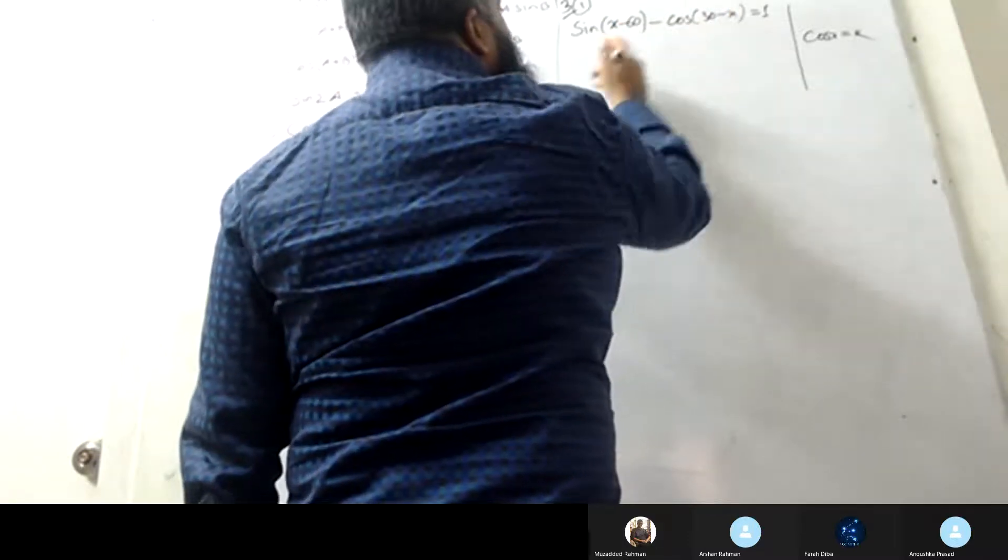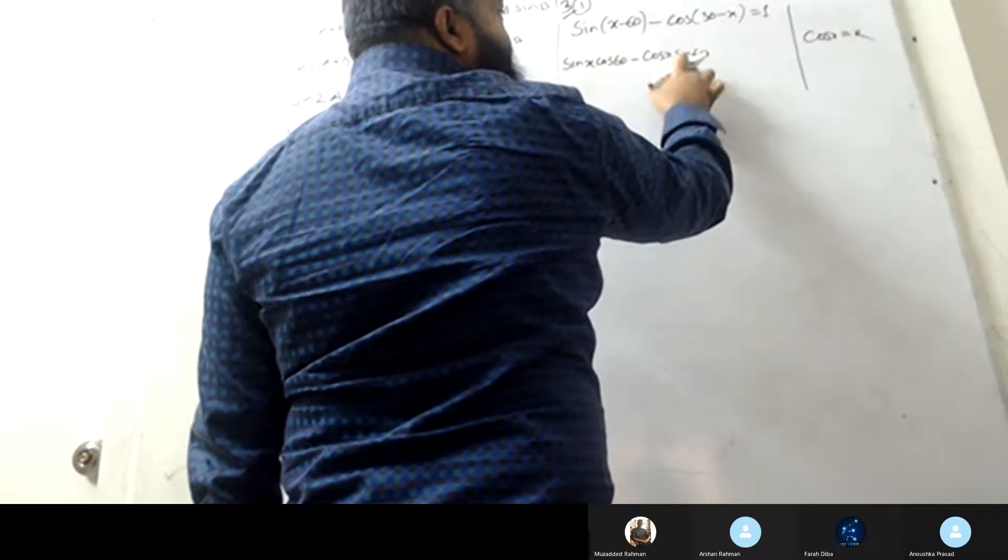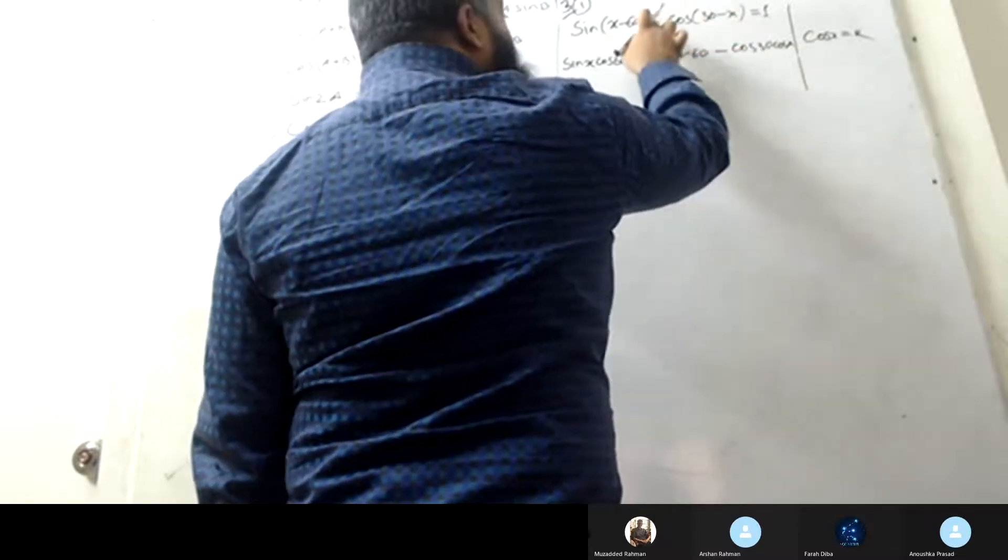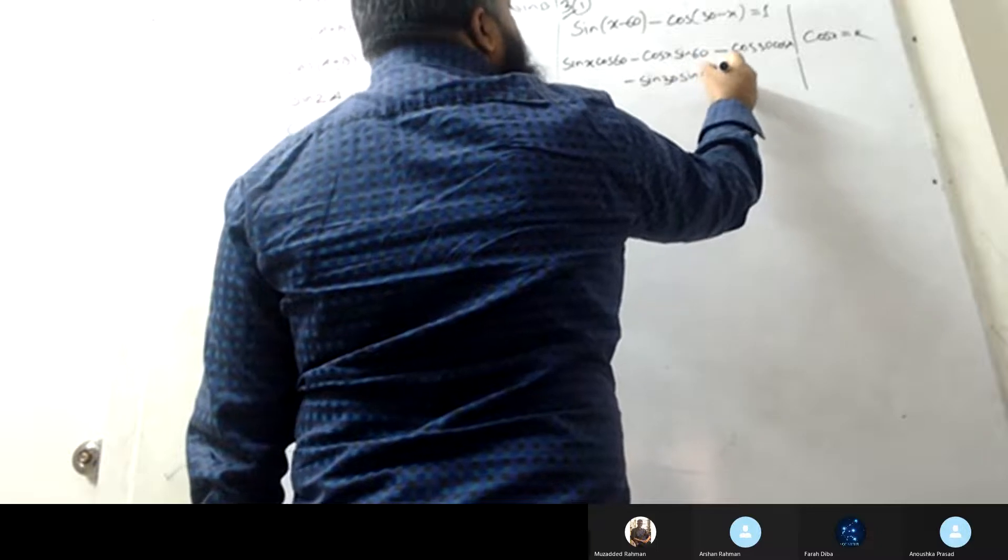The formula is written as sin a cos b minus cos a sin b. This is the sine a minus b formula. The cos a minus b formula is cos a cos b plus sin a sin b equals to one.